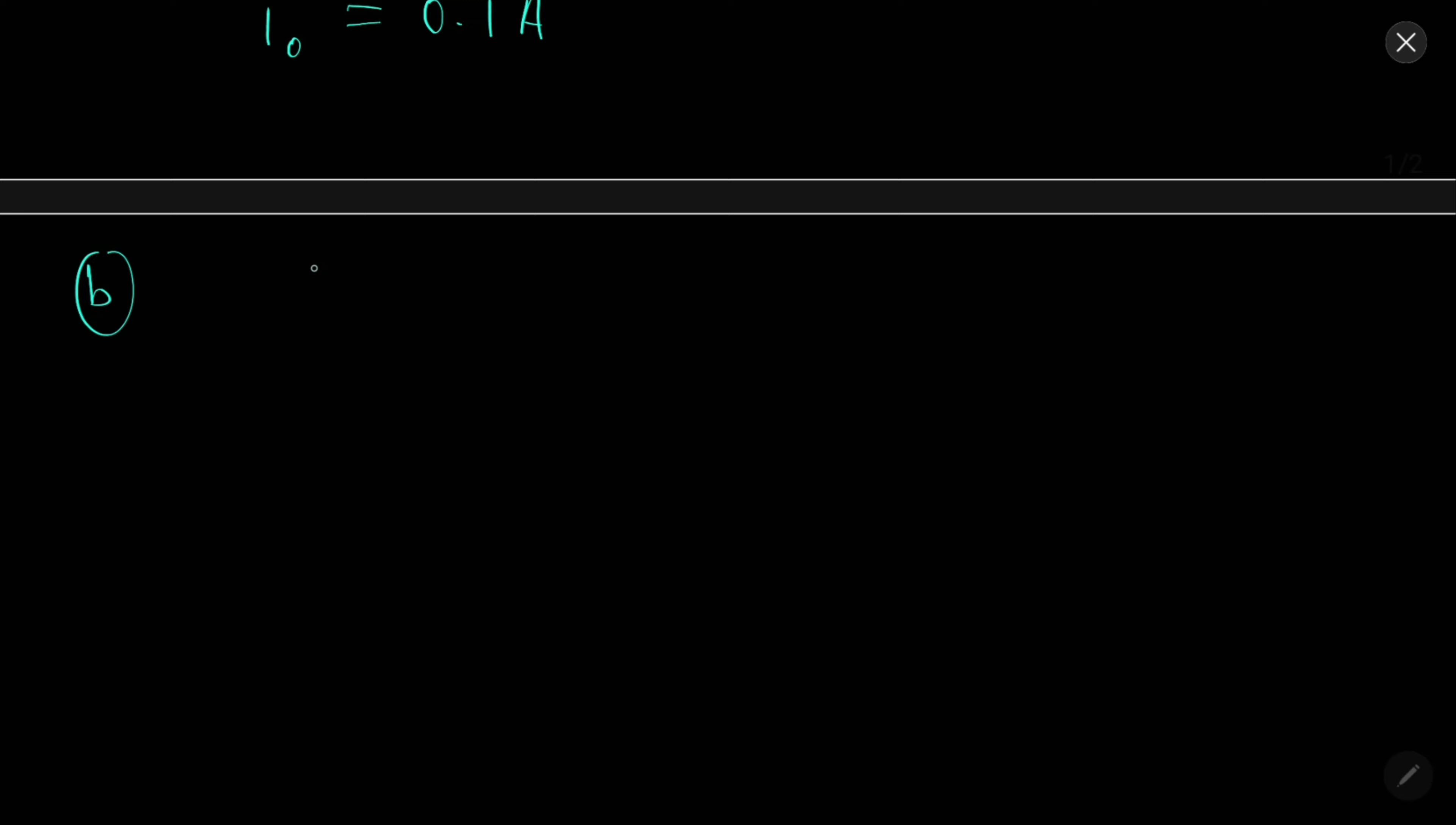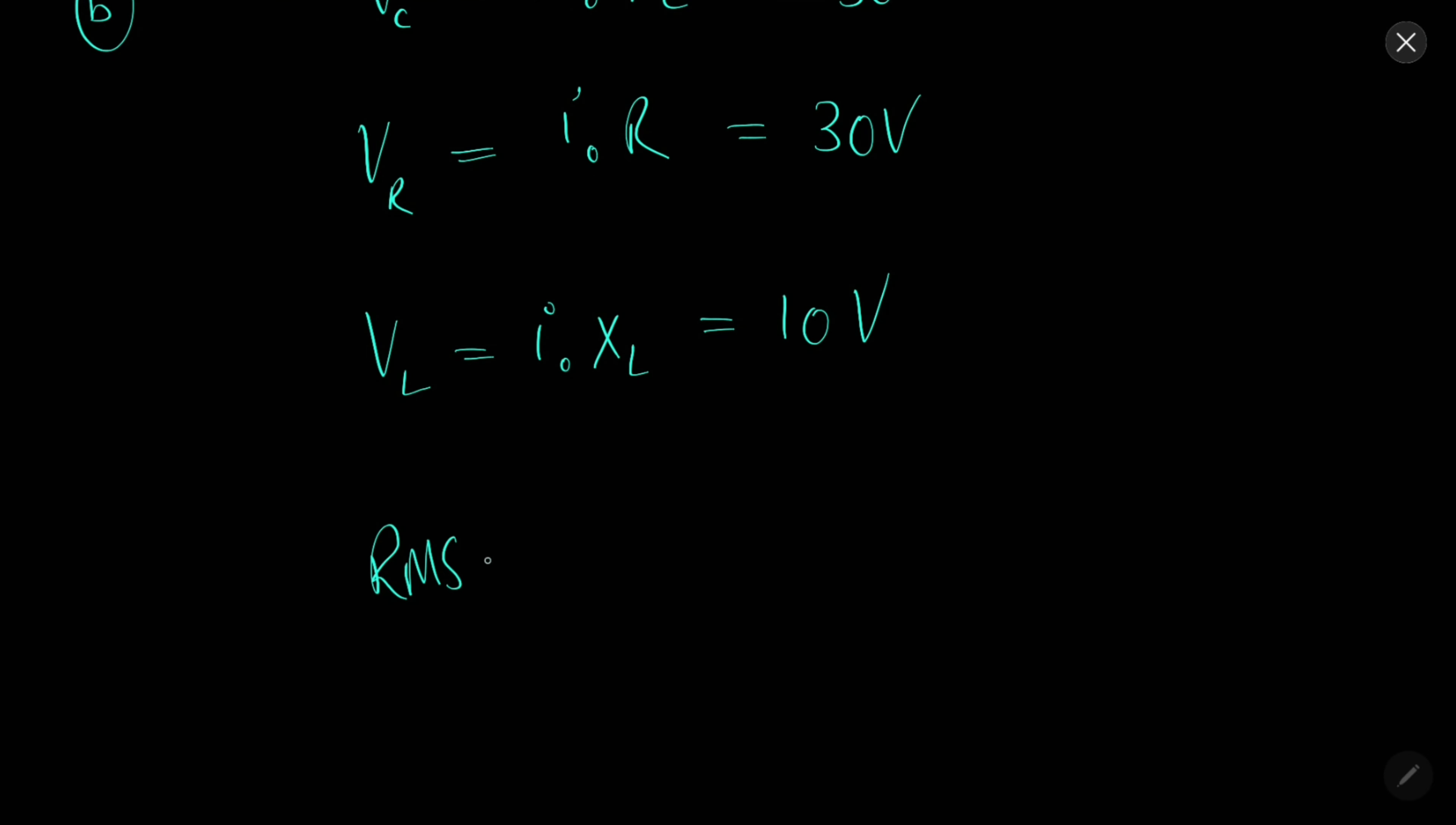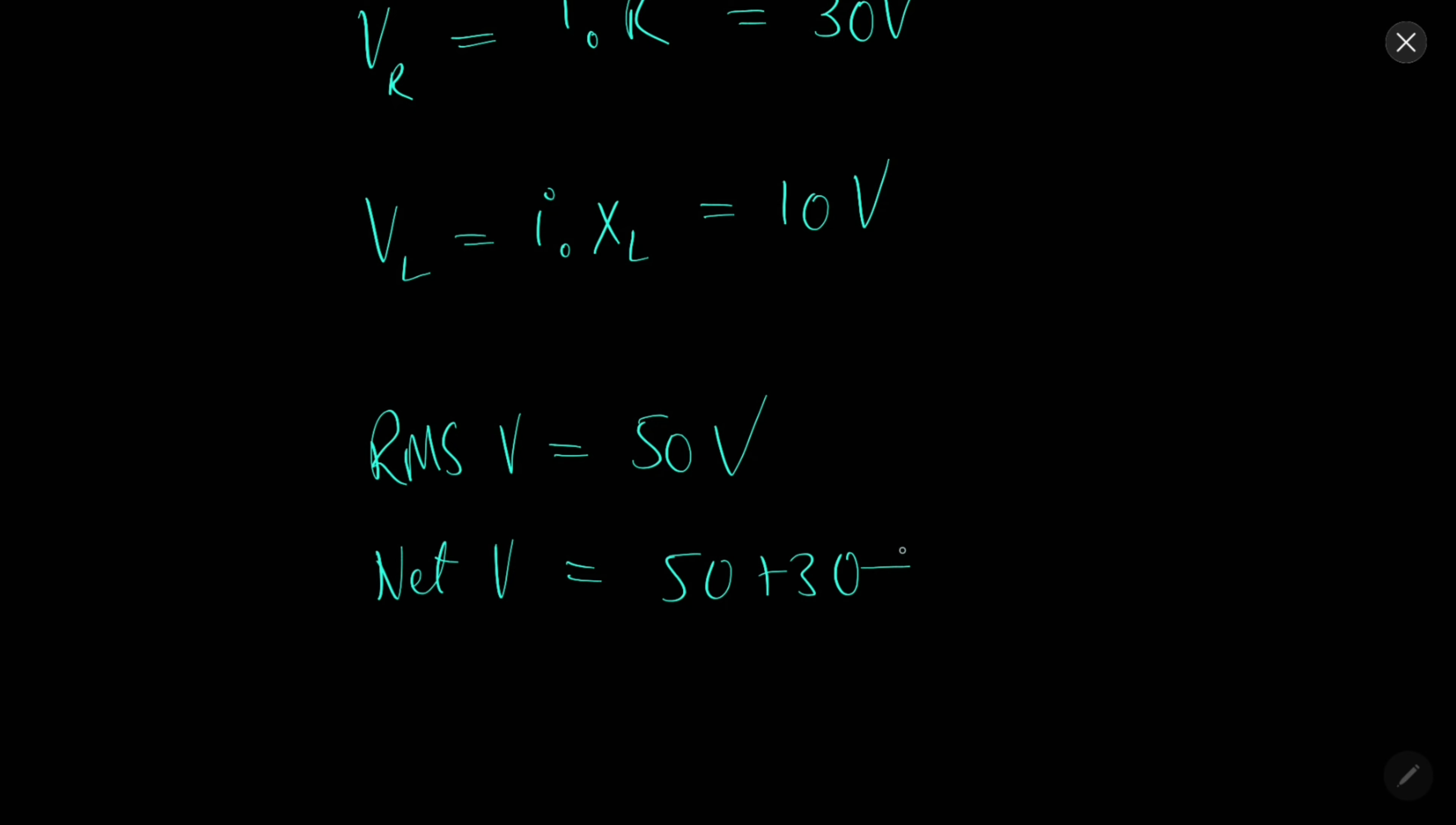Part D: Potential difference across capacitor, resistor and inductor. It will be I₀ into X_C, I₀ into R, I₀ into X_L which will give us 50V, 30V, 10V. RMS potential will be 50V. Net voltage drop will be 50 plus 30 plus 10 equals 90V.